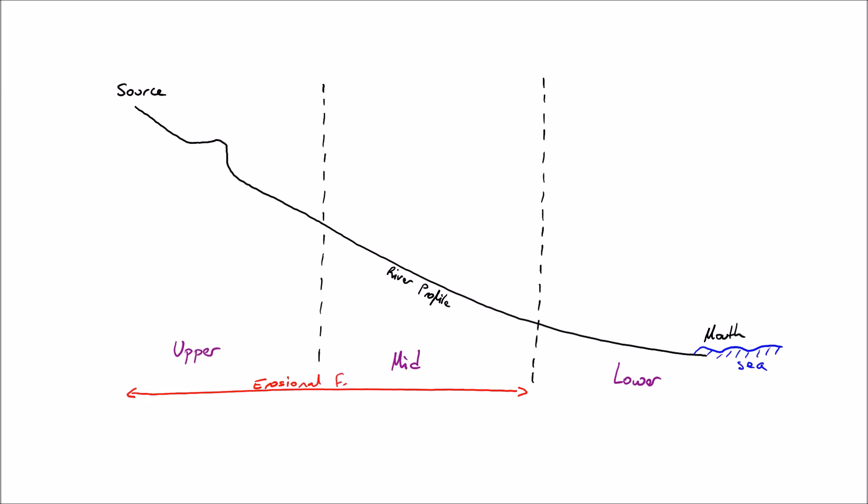You can see I'm marking over here with the red line the extent of the different types of features that you get. So erosional features upper and mid, and depositional features mid and lower.